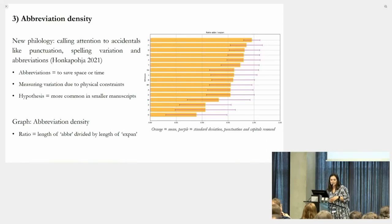Last but not least, we also are looking at the abbreviation density of all the manuscripts. The new or material philology really focuses on scribal variation, calling attention to accidentals such as punctuation and abbreviations. Abbreviations are used to save space or to save time. Several studies have shown that the smaller the manuscripts, so the less space there is, the more abbreviations there are. We wanted to check this hypothesis.